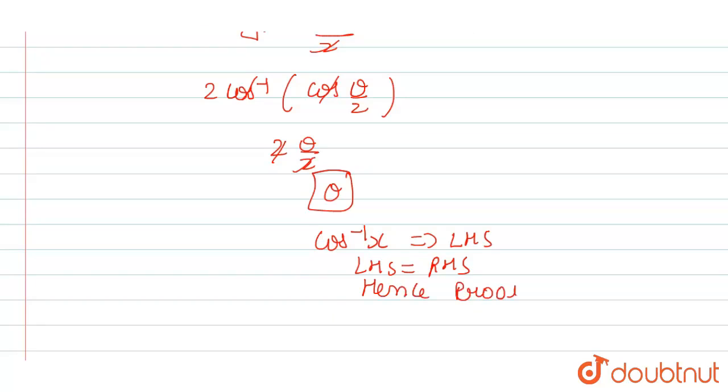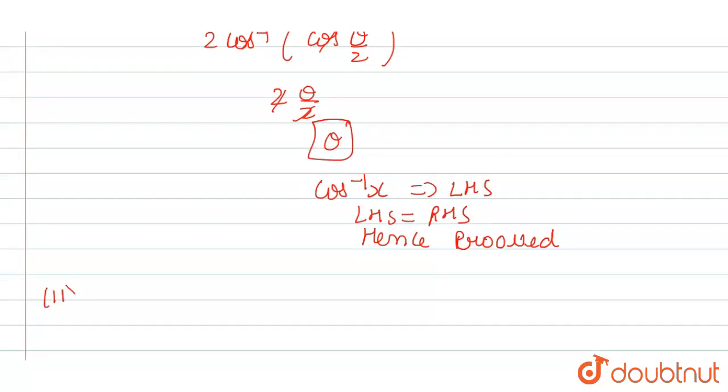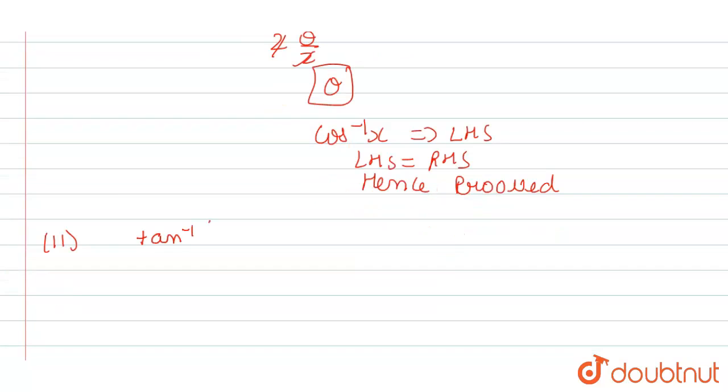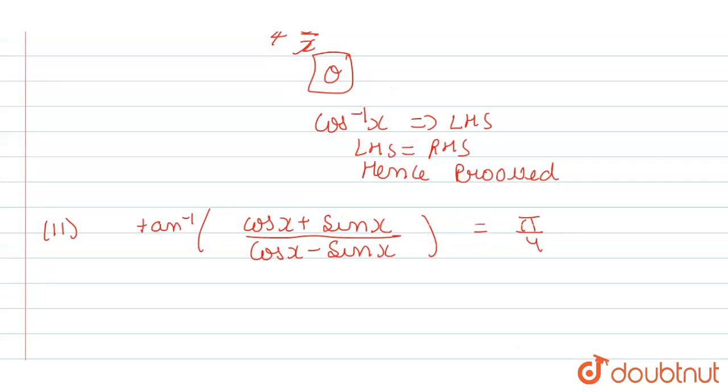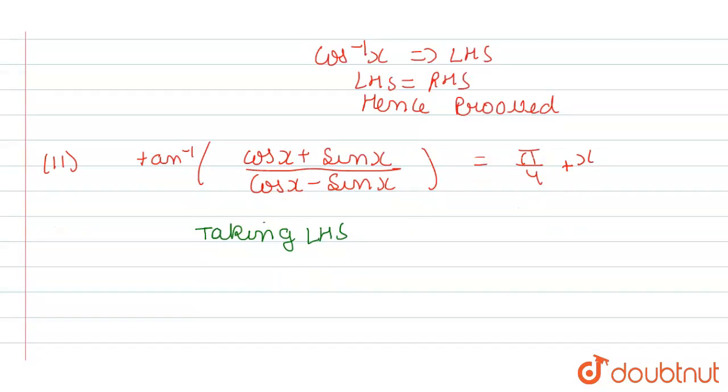Now we will prove second question, which is tan inverse of cos x plus sin x divided by cos x minus sin x. So we have to prove that this is equal to pi by 4 plus x. So how to do that? First of all, we will take LHS.